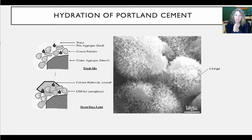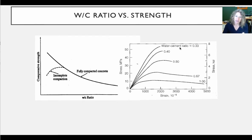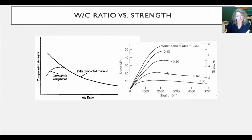How much water you mix in will obviously make your concrete more workable in the wet state, but too much water decreases the strength. Looking at the plot, we can clearly see that a low water-to-cement ratio — like 0.33 versus a high one like 1 — gives us much higher compressive strength at failure. So it will be stronger if we have a lower water-to-cement ratio.